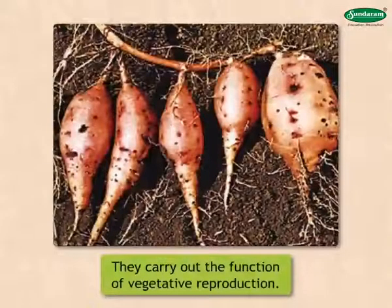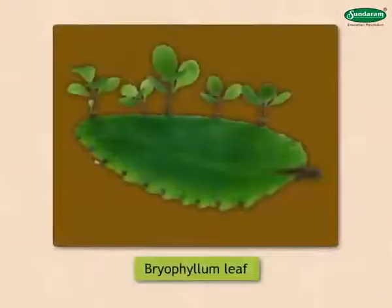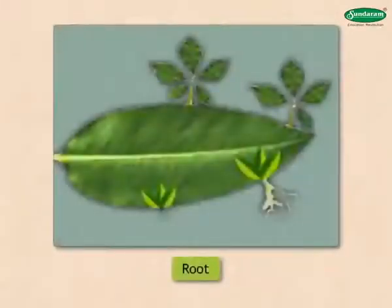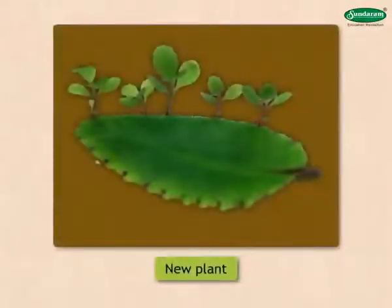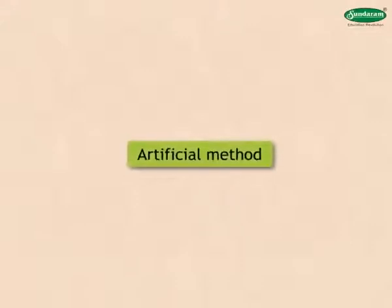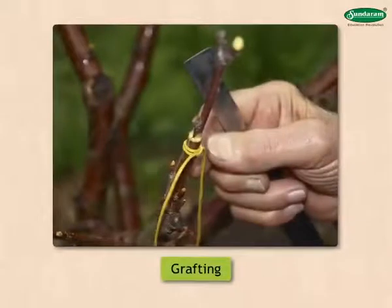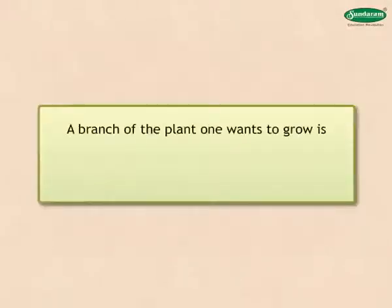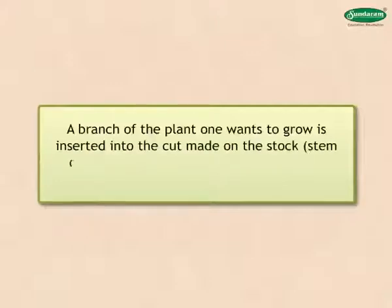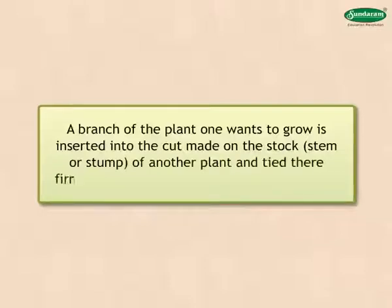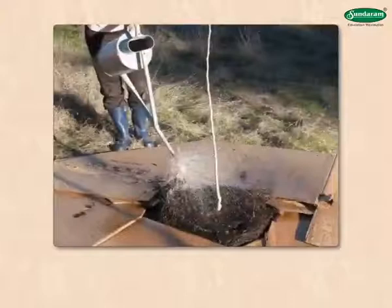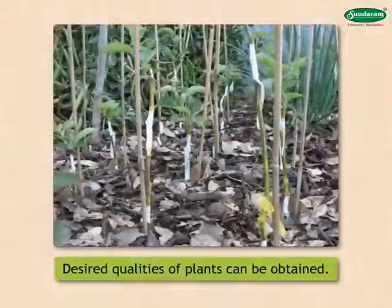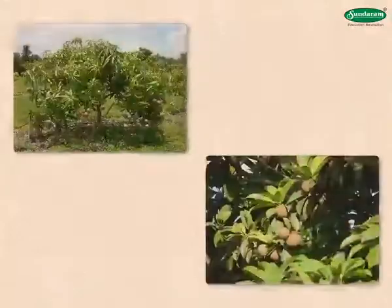Vegetative reproduction from leaves: buds grow on the margins of the bryophyllum leaf. They take root when the leaf falls on the ground and a new plant grows from them. Nowadays, artificial methods like grafting are used to grow a plant. A branch of the plant one wants to grow is inserted into the cut made on the stock — the stem or stump of another plant — and tied firmly. The branch to be grown is called the scion. If the scion gets a good supply of water with the required salts dissolved in it from the stock, a new plant with the desired qualities can be obtained — for example, mango and chiku.